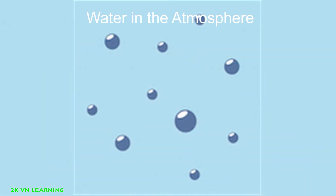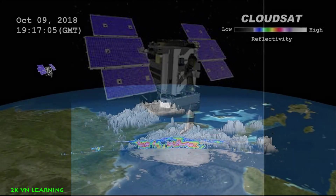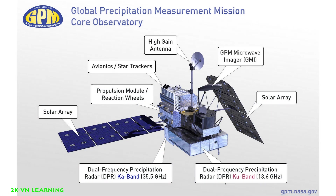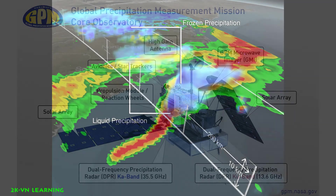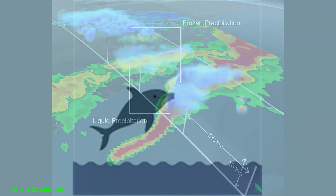NASA's CloudSat mission studies water in our atmosphere in the form of clouds. CloudSat gathers information about clouds and how they play a role in Earth's climate. Also, the international satellite called the Global Precipitation Measurement mission, or GPM, observes when, where, and how much it rains and snows on Earth.